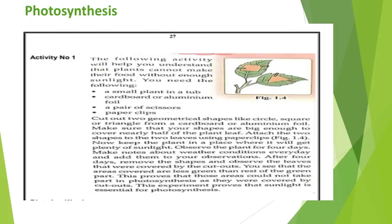Here is an activity. The following activity will help you understand that plants cannot make their food without enough sunlight. You need the following things: a small plant in a tub or any plant available at your home, cardboard or aluminum foil, a pair of scissors, paper clips.